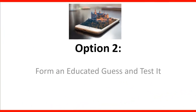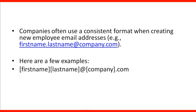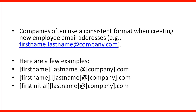Option two is to form an educated guess and test it. If you cannot find the email through option one, you can try this. Companies often use a consistent format when creating new employee email addresses — for instance, firstname.lastname@company.com, or firstinitial.lastname@company.com, or firstname@company.com. You can try to use that setup for guessing. It's a little tedious but gives you a chance to find it.